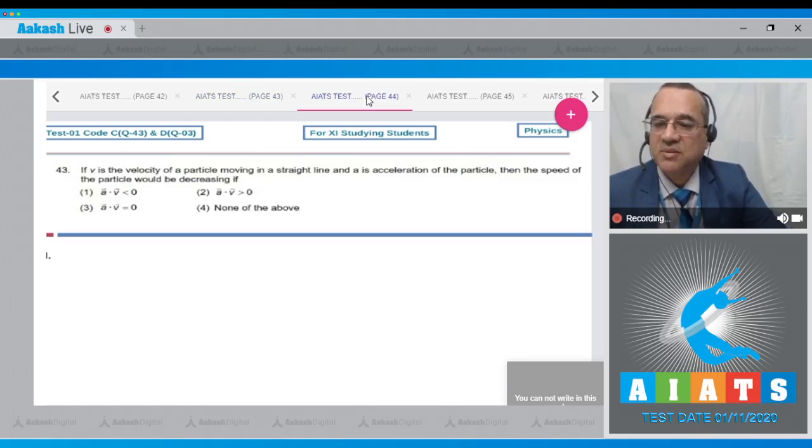Question number 43 says if v is the velocity of a particle moving in a straight line and a is the acceleration of the particle, then the speed of the particle would be decreasing if: first option, a·v less than 0, a·v greater than 0, a·v equal to 0, or none of these.